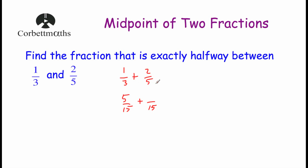For two-fifths, we want a denominator of fifteen. To get from five to fifteen we multiply by three, so multiplying the numerator by three: two times three is six. So two-fifths as an equivalent fraction is six-fifteenths. Adding five-fifteenths and six-fifteenths together gives us eleven-fifteenths.